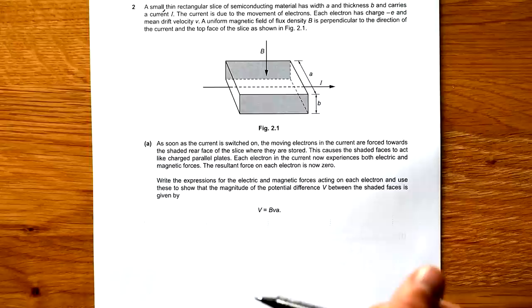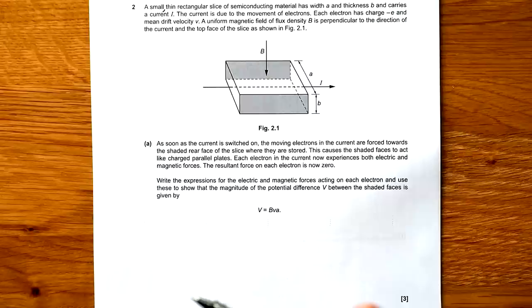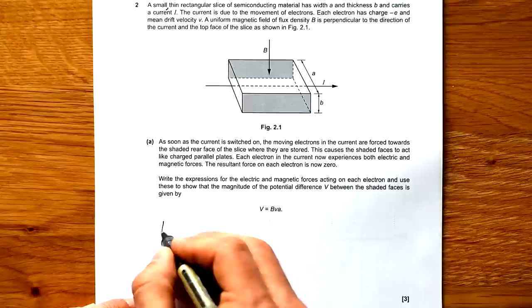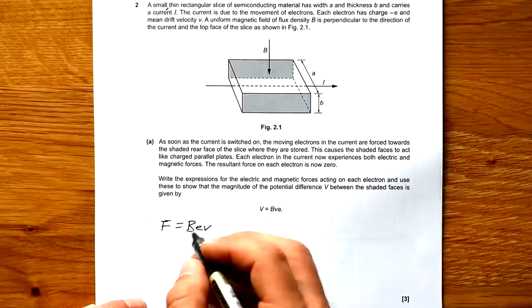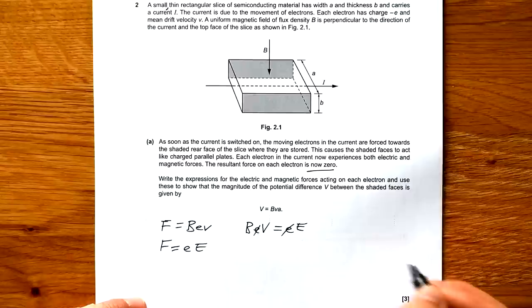As soon as the current switched on, the moving electrons in the current are forced towards the shaded rear face of the slice where they are stored. This causes the shaded faces to act like charged parallel plates. Each electron in the current now experiences both electric and magnetic forces. The resultant force on each electron is now zero. Write the expressions for the electric and magnetic forces acting on each electron and use these to show that the magnitude of the potential difference V between the shaded faces is given by V equals BVA. Force on each electron is F equals Bev due to the magnetic field and due to the electric field, it's EE.